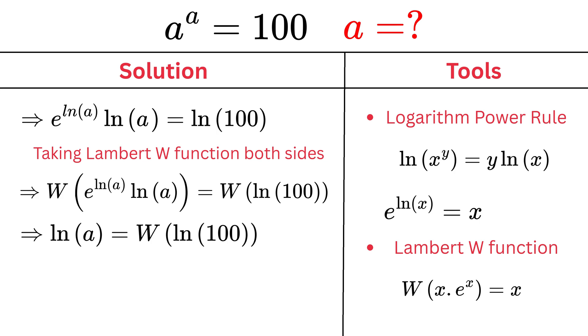Step 6: Solving for a. To find a, we take e raised to the power of both sides. A equals e raised to the power of Lambert W of the natural log of 100.